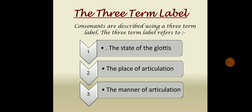The three-term label. Consonants are described using a three-term label. The three-term label refers to: number one, the state of the glottis; number two, the place of articulation; and number three, the manner of articulation.